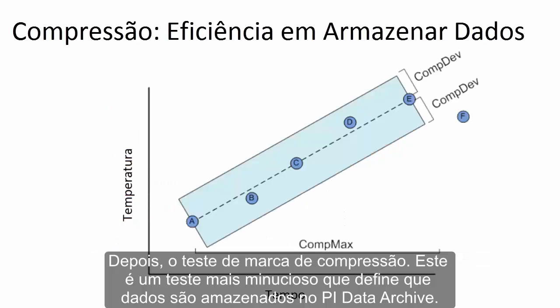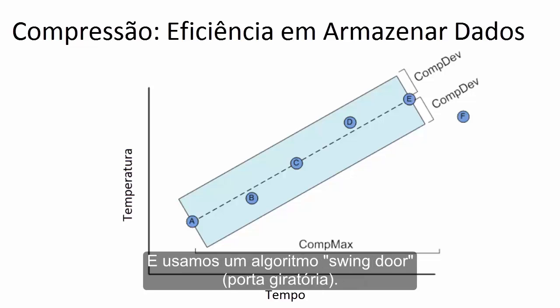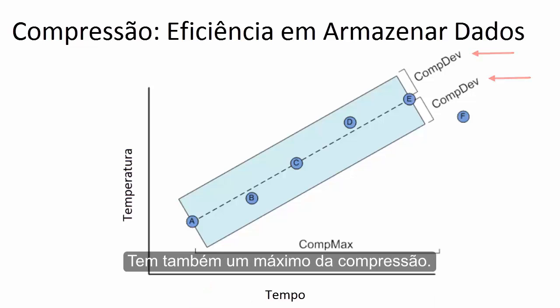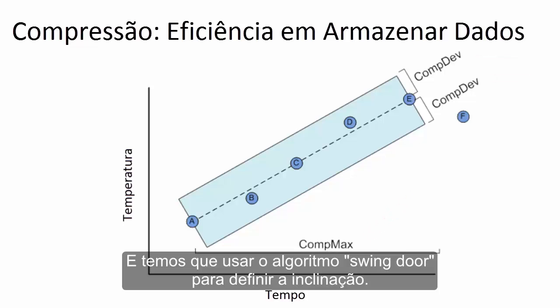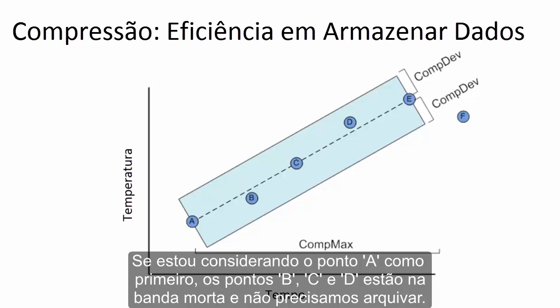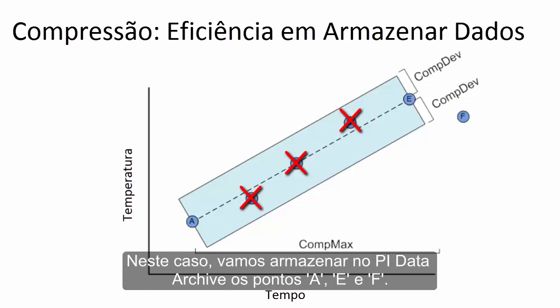Next is the compression marking test. This is a more thorough test that defines which data is stored in the PI Data Archive. Unlike exception, compression can have a slope, and we utilize the so-called swing-door algorithm. In terms of PI Tag attributes, we have compression deviation which defines the dead band, compression maximum, and the slope of the data is handled using the swing-door algorithm. If point A is the first point, points B, C, and D are within the dead band and don't need to be archived. Point E is the last point and point F falls outside the dead band, so what we store in the PI Data Archive are points A, E, and F.